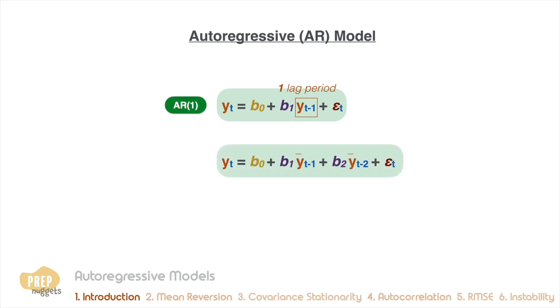In practice, an AR model can regress on itself with a lag of more than one period. If it has a lag of one and two periods, we call this a second-order autoregressive model, or an AR(2) model.